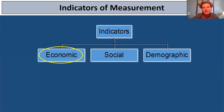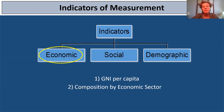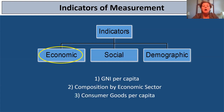Let's look at a couple of economic indicators — this is not an exhaustive list. Some economic indicators of measurement would be GNI per capita, or gross national income per capita — the average income a citizen is going to make in any given year. Another one is composition by economic sector: are jobs largely in the primary economic sector, meaning agricultural or forestry? Are they more in the secondary sector, which is industry? Or more in the tertiary sector, which is services? Another example is consumer goods per capita — things like internet access, how many cars the average family has, how many cell phones.